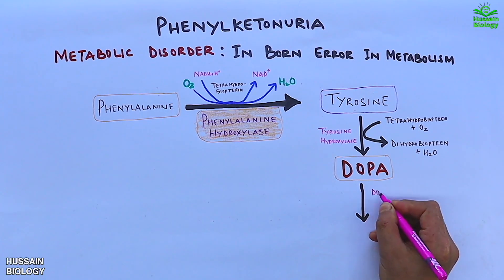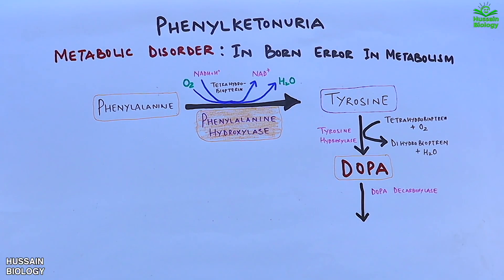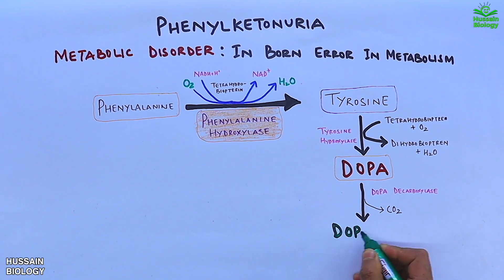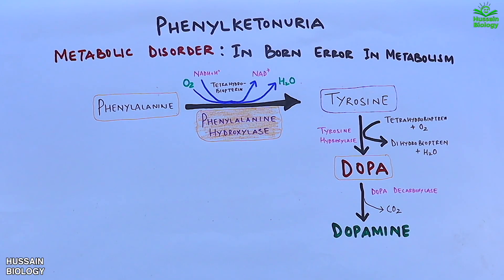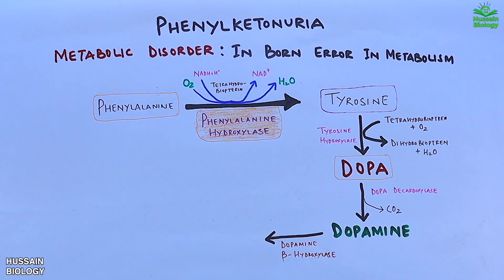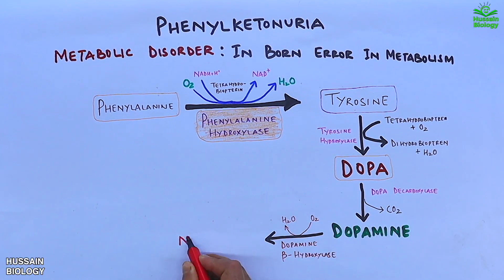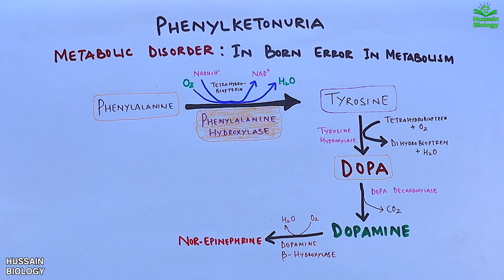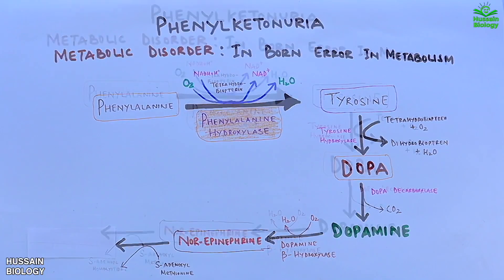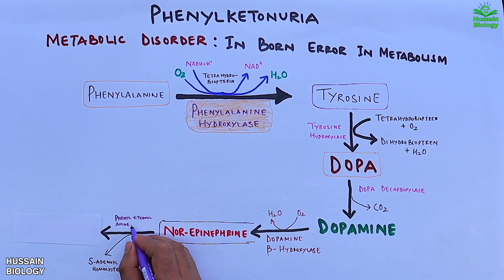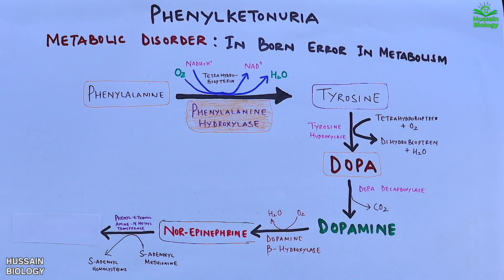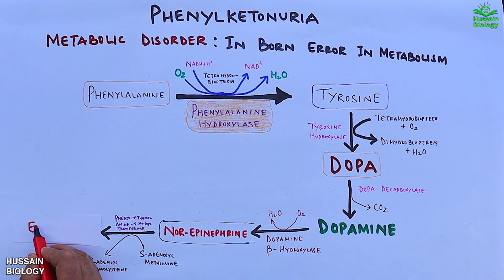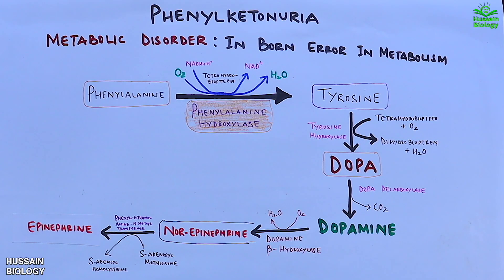DOPA is then acted upon by DOPA decarboxylase enzyme to produce dopamine. Dopamine beta-hydroxylase then acts on dopamine and converts it into norepinephrine. In the last step, phenylethanolamine N-methyltransferase enzyme acts on norepinephrine in the presence of S-adenosyl methionine and converts it into epinephrine.